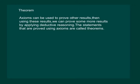Let us now define theorems. Axioms can be used to prove other results. Then using these results, we can prove some more results by applying deductive reasoning. The statements that are proved using axioms are called theorems.